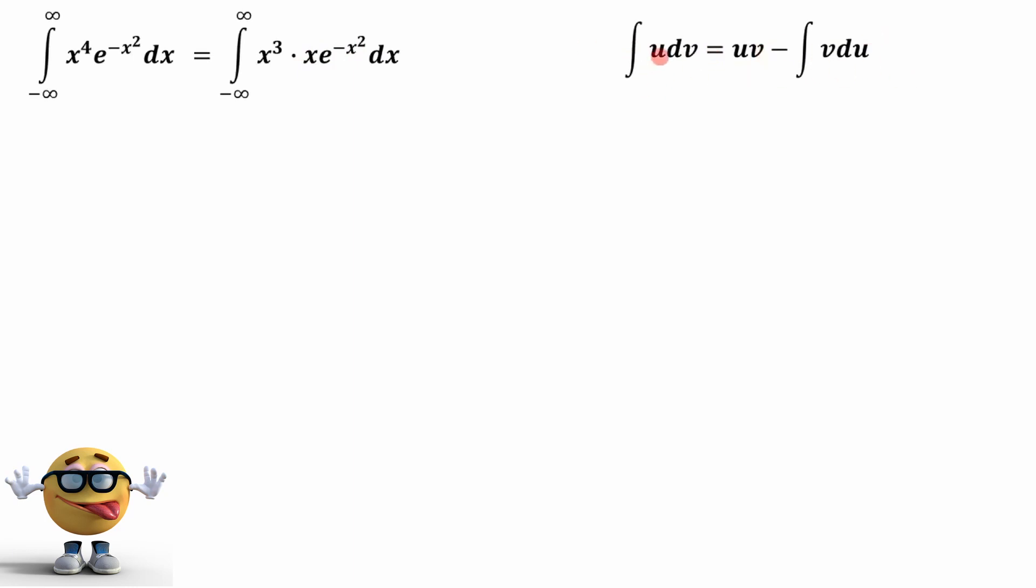Now u we're going to set equal to x cubed. Therefore du is equal to 3x squared dx using the power rule. Therefore dv is going to equal everything else, which is what we have here.